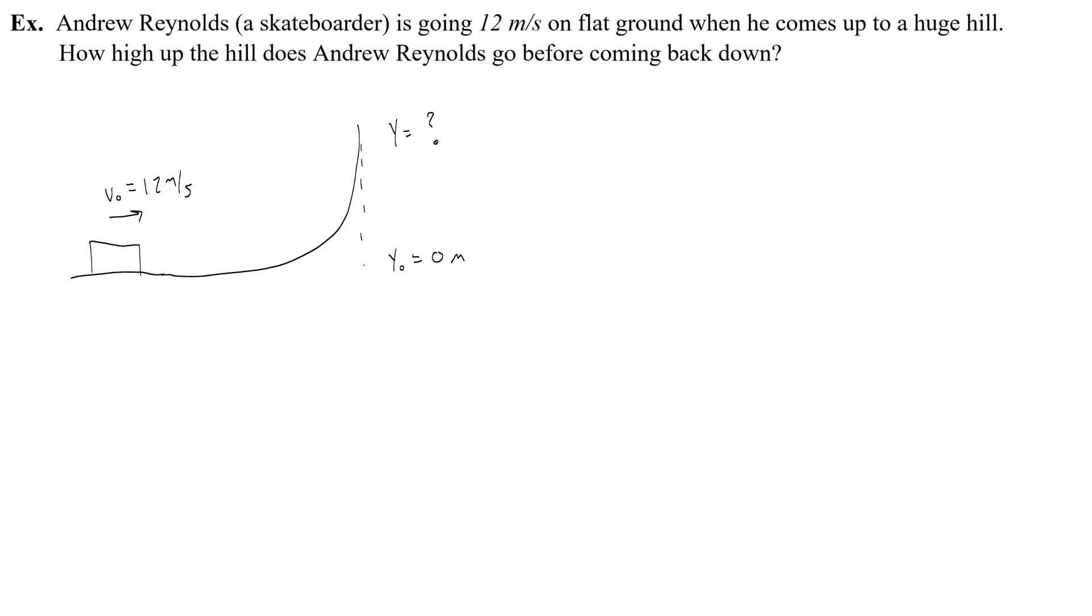Here's how I set this problem up. E₀ = E, and I recognize that in the beginning, as long as I say that the ground it starts at is zero, there's no potential energy, so no UG, and instead there's all kinetic energy from that 12 meters per second of velocity. Then at the end, the box will reach its highest point when its velocity is zero because that's right before it comes back down. So I would have no kinetic energy and all potential energy.